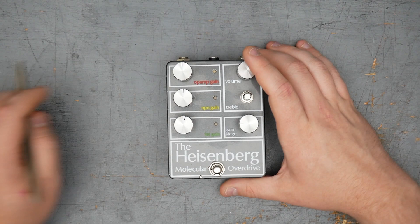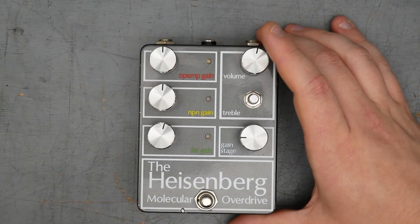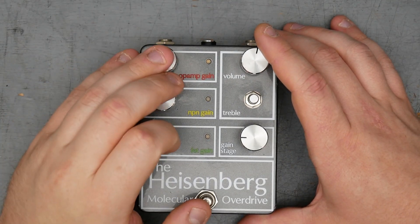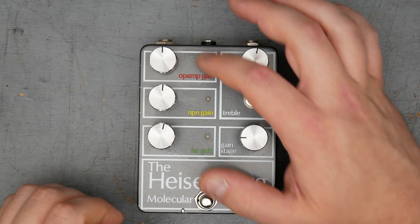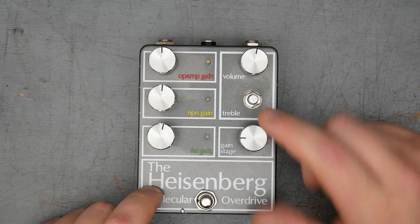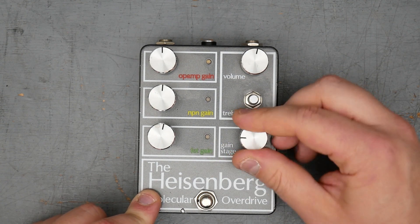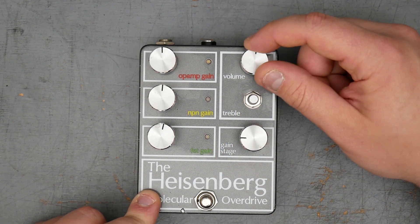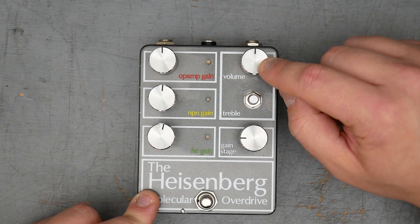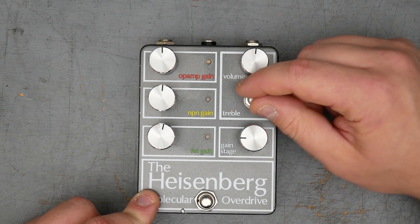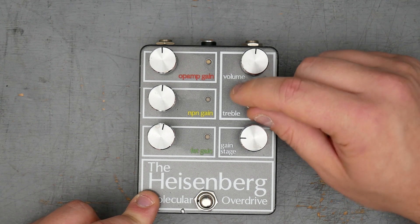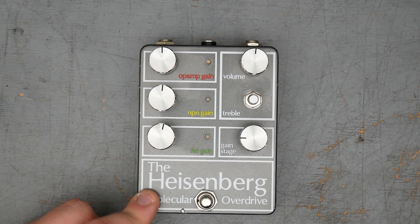So I think that's enough about the info device. Let's go ahead and look at the actual pedal. We already looked a little bit at the layout here. We've got our three gains for each of the three gain stages: op amp, NPN, and MOSFET. We select between those three gain stages with the little three position switch here. Volume control is fairly straightforward, probably just at the output, just volume control. And treble is probably gonna be just like a simple capacitive roll off treble circuit.